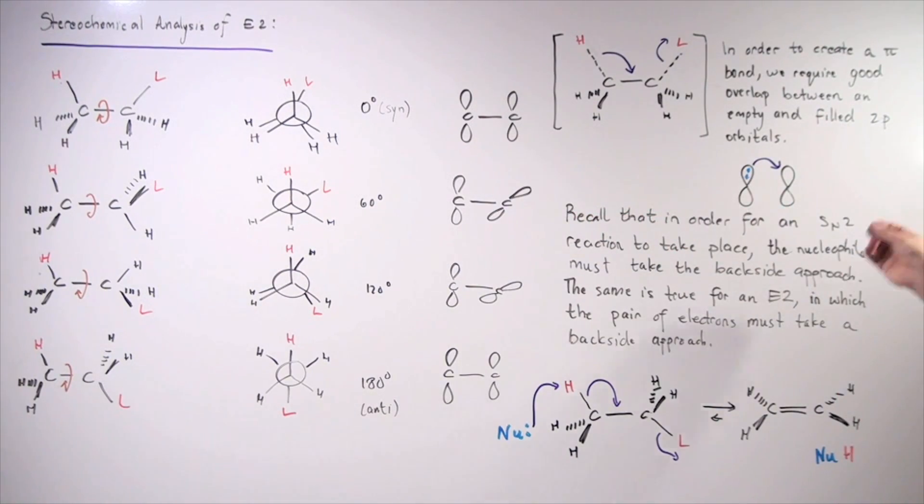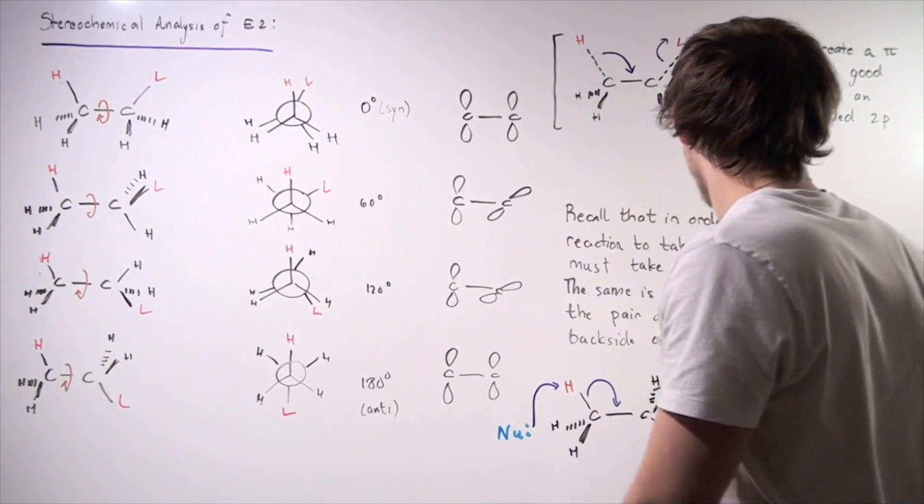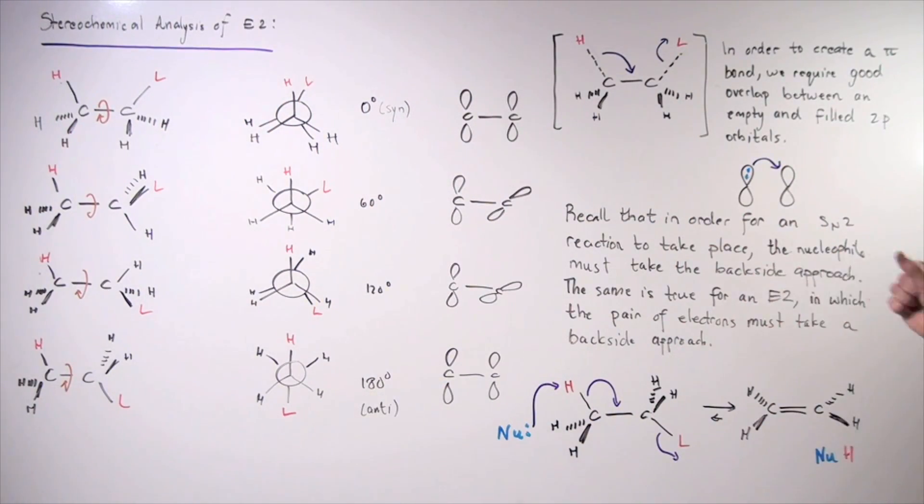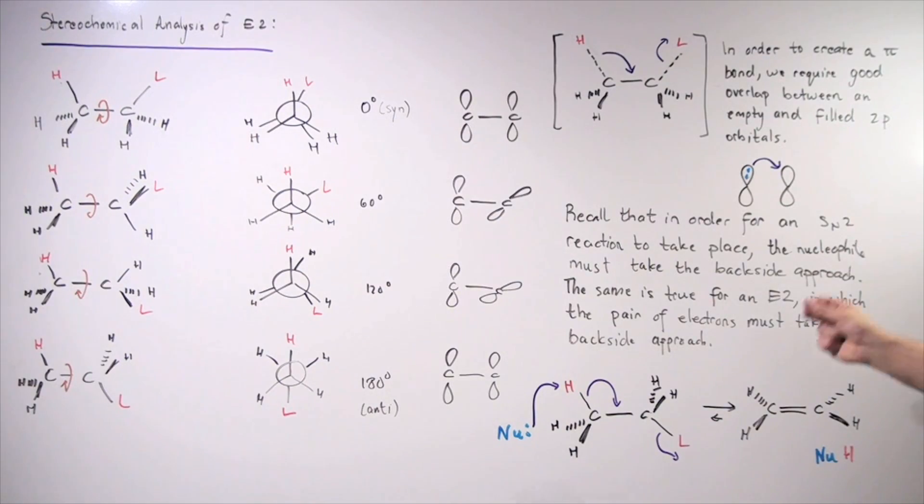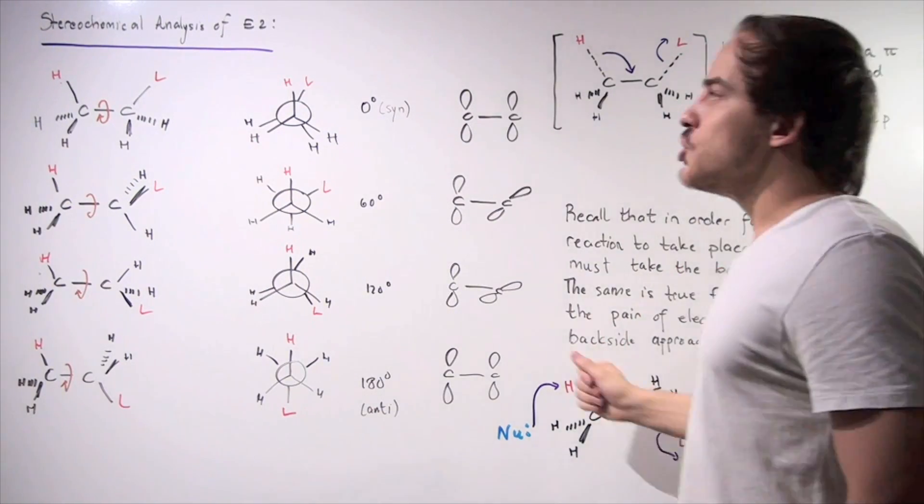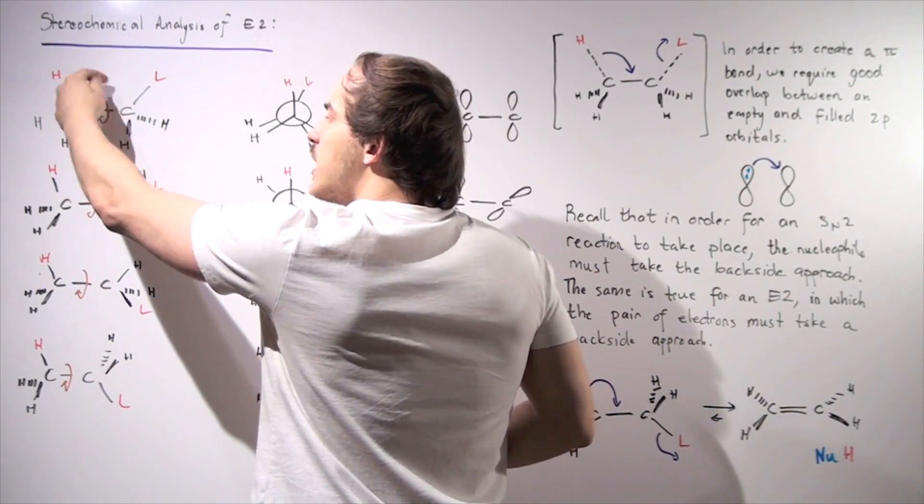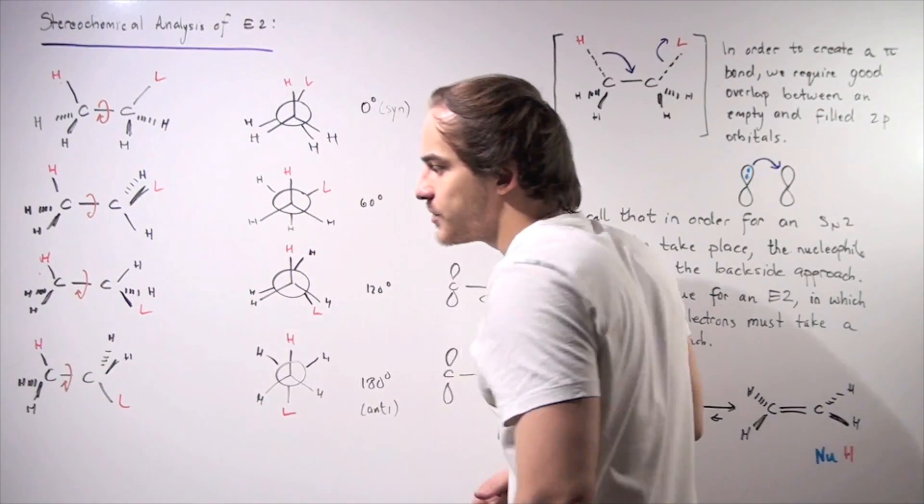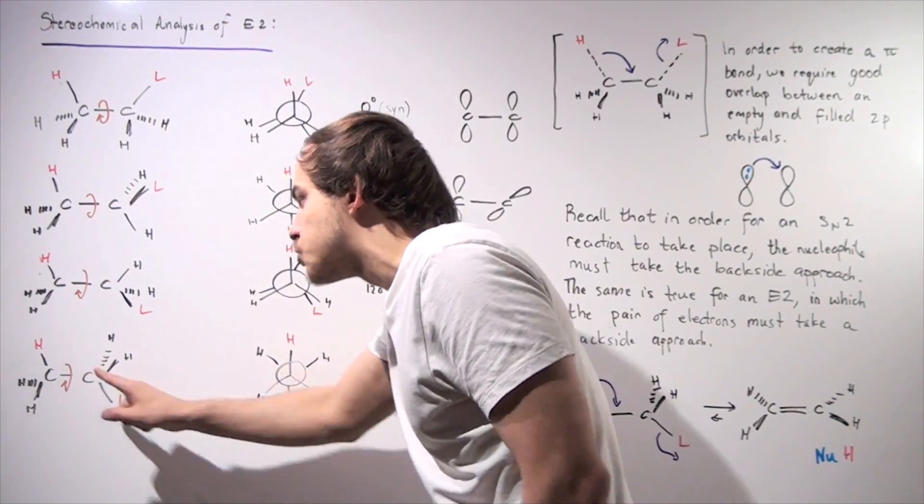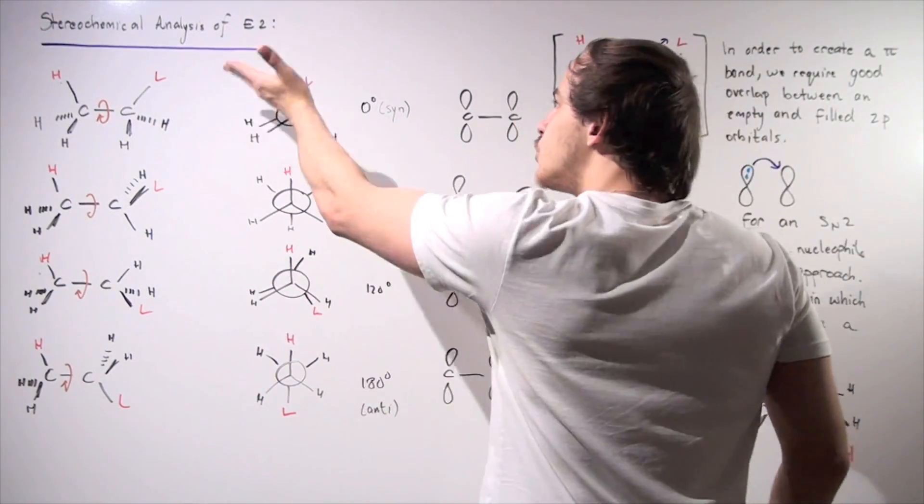Recall that in order for an SN2 reaction to take place, the nucleophile must take the backside approach. It must approach via the backside kicking off the leaving group. The same is true for an E2 reaction, in which now, not the nucleophile, but the pair of electrons must take a backside approach. Notice that in this case, if the electrons come off, they will attack via a frontside approach. They're attacking the L via a frontside approach, kicking off the L. In this case, the pair of electrons approaches via a backside approach, and that means that this is the conformation that must exist in order for our E2 reaction to take place.